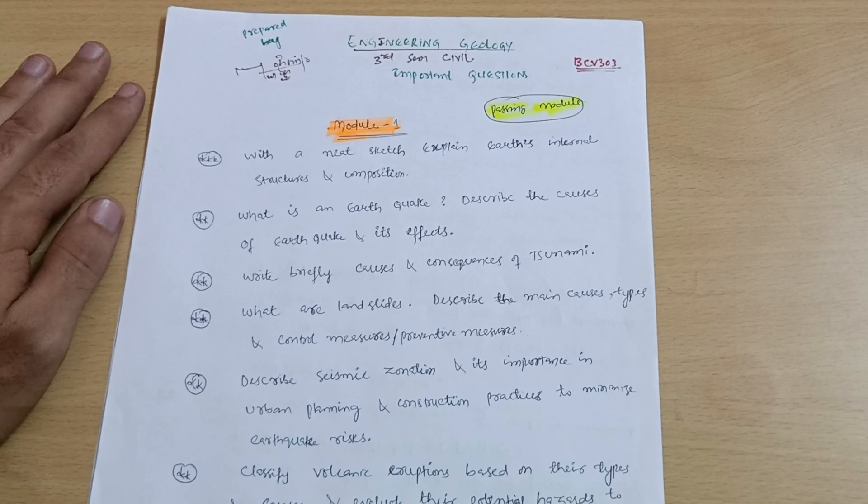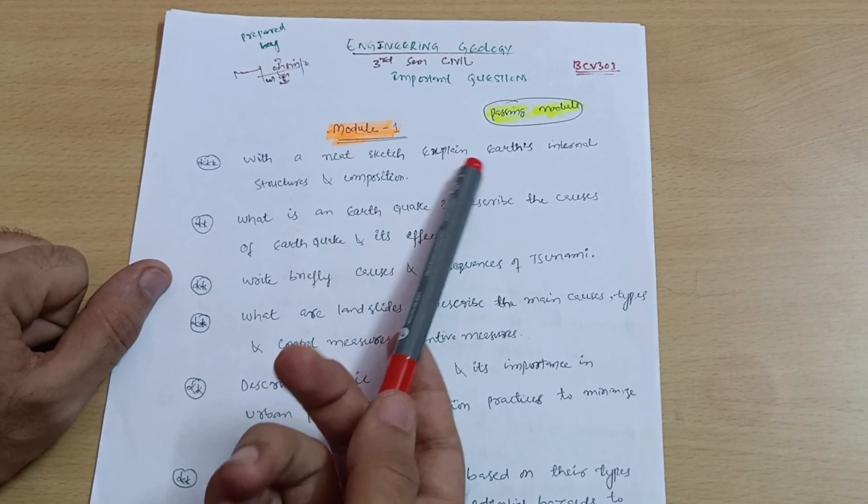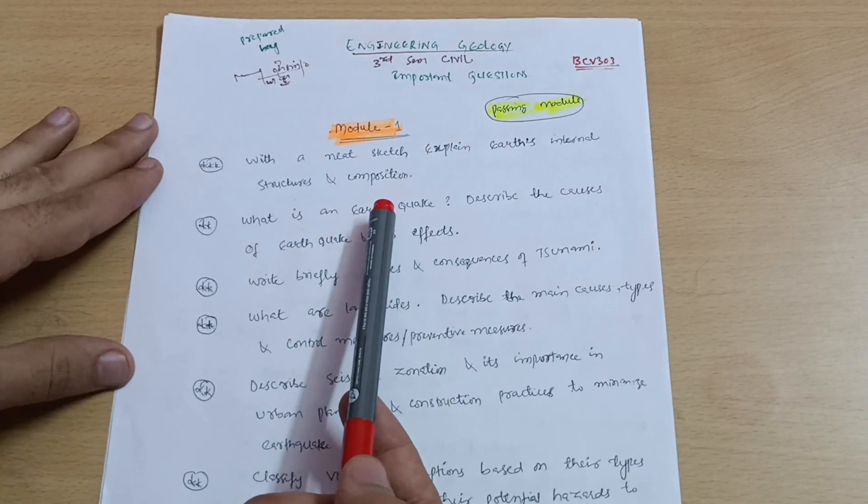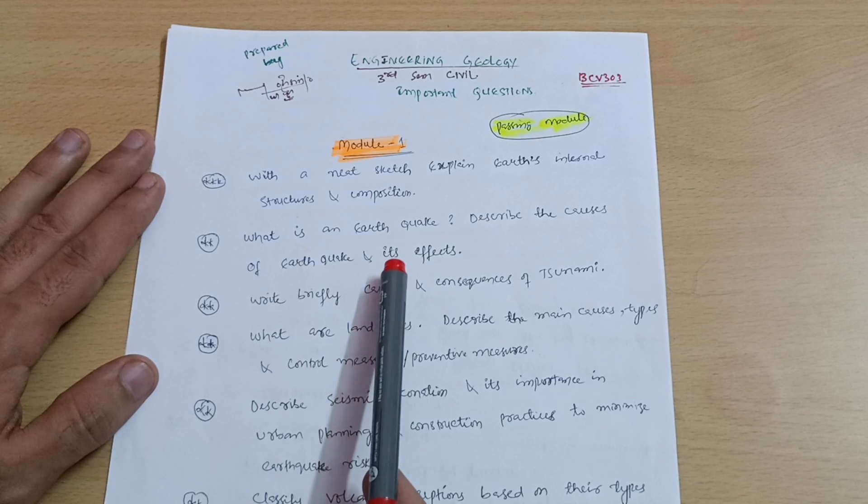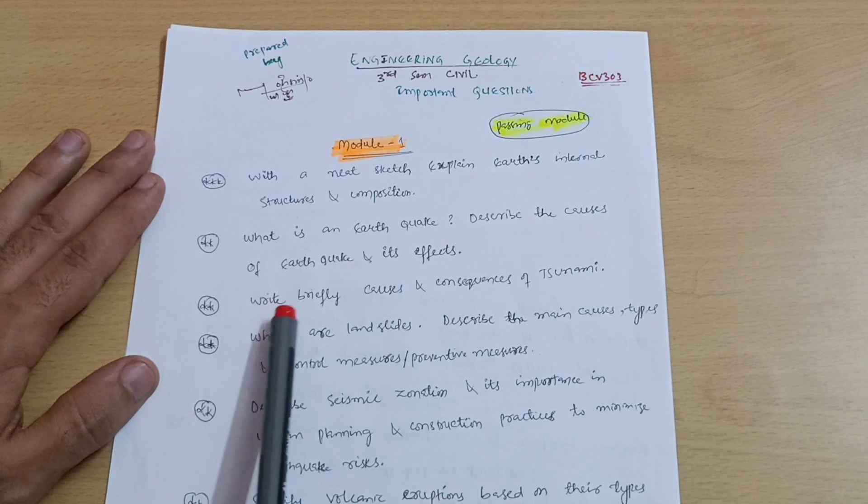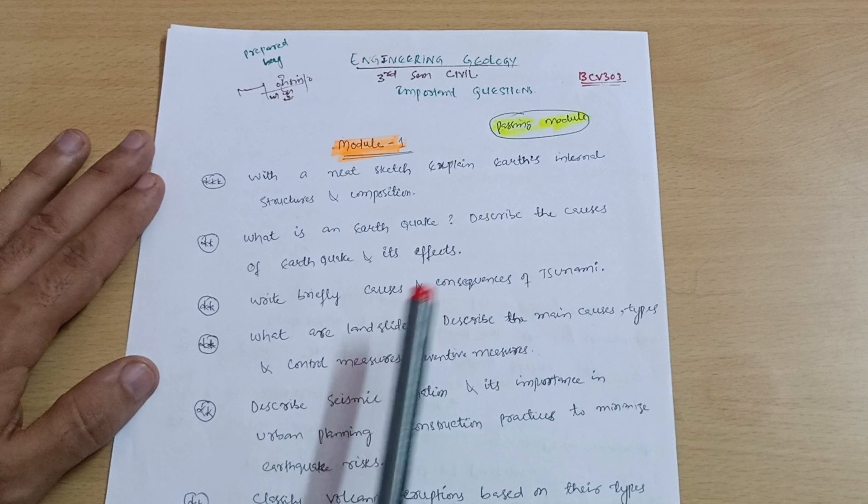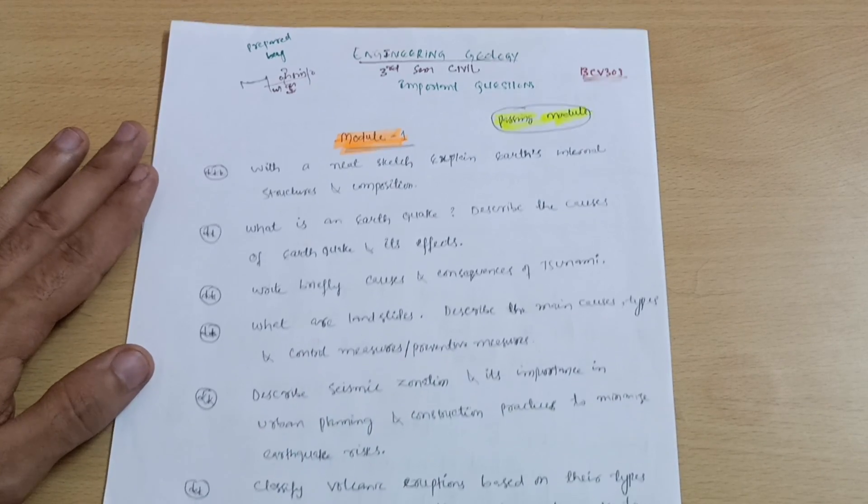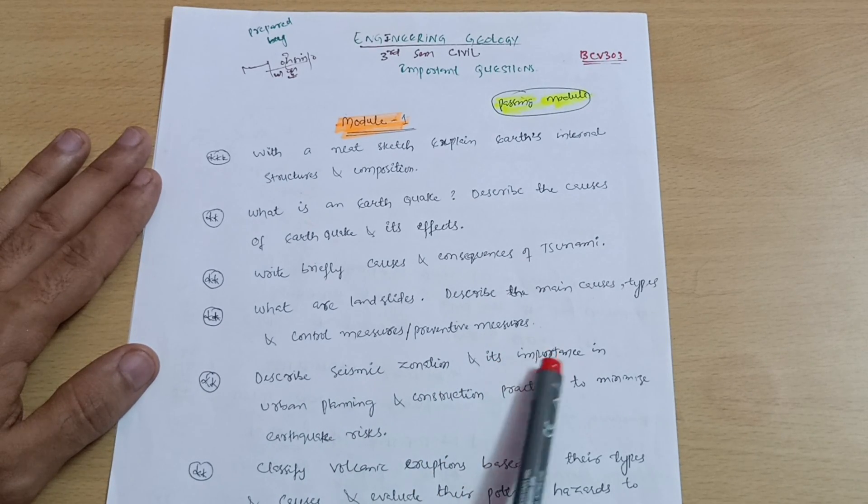Let me discuss the passing modules for this particular subject. The beginning three modules are the passing modules which contain lots of theory, and I have taken some most important questions which will appear in the examinations. With neat sketch, explain Earth's internal structures and composition. This may be the first important question. What is an earthquake and describe the causes of earthquake and its effects.